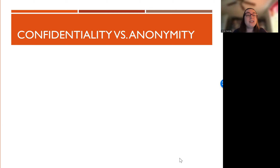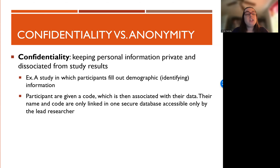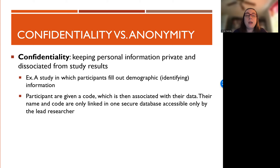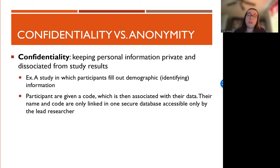We talked earlier about breaches in confidentiality as a potential risk, but what's the difference between confidentiality and anonymity? Confidentiality is where we keep personal information private. We collect information on the participant's name, demographic information, birthdays, and things like that, but then we eventually separate it out. In my dissertation research, we did collect participants' names because we needed it for one of the protocols. Once we had all of the data entered, we would assign each participant a code and remove their name from the main database.